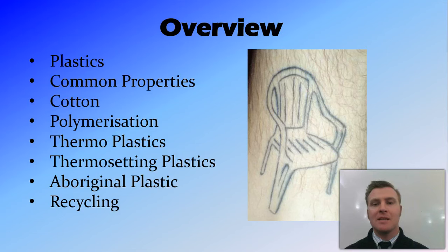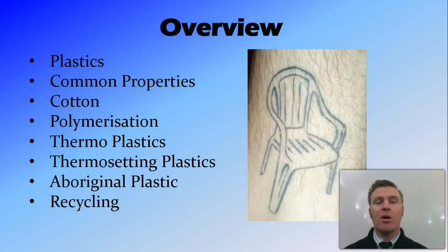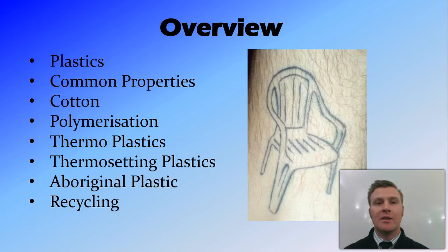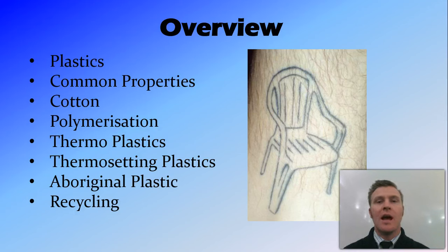In summary, plastics are things that can be molded. Common properties include being light, melting when heated, and being non-biodegradable. Cotton is a biopolymer made of about 90% cellulose, which is a polymer made from the monomer glucose. The polymerization reaction joins monomers to make a polymer. Thermoplastics can be shipped as pellets and molded by heating, while thermosetting plastics are heat resistant and must be molded during production. Indigenous Australians used resin as a plastic glue in their tools, and recycling thermoplastics is important given their non-biodegradable nature.